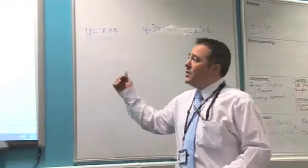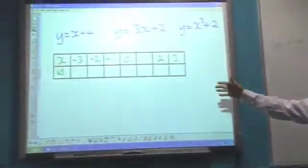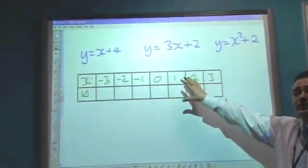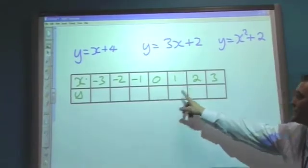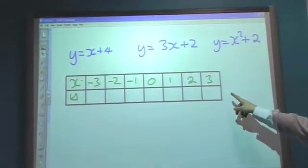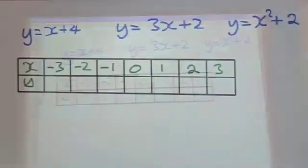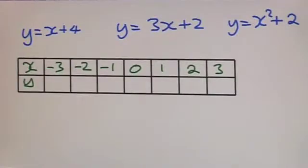Okay, on a GCSE paper, that's what we're going to be given. You're going to be given a table of values, usually a minus to a positive, and you're going to have to find the values of y. Now, there is usually a bit of room underneath it, but if there's not, get a spare piece of paper.